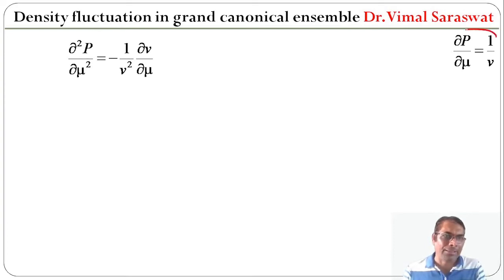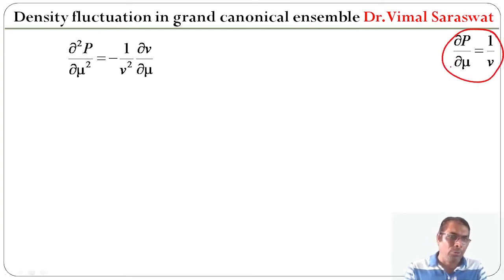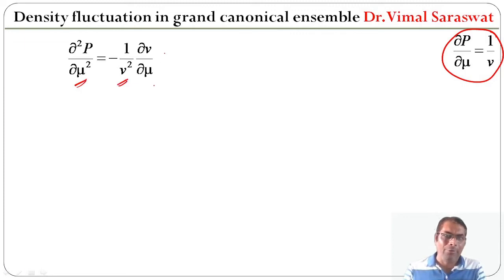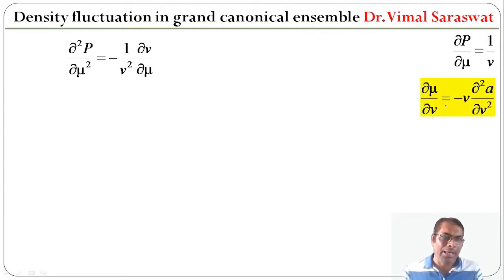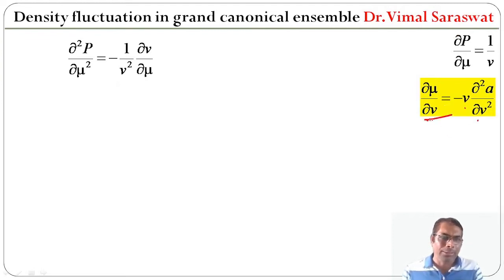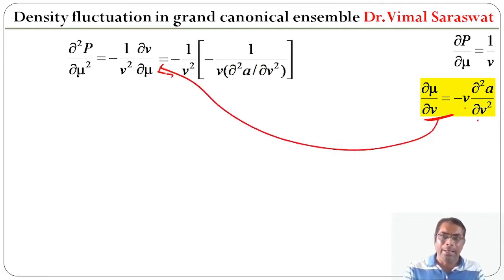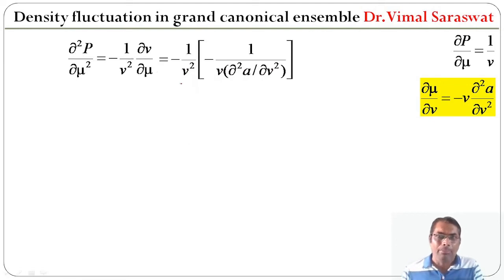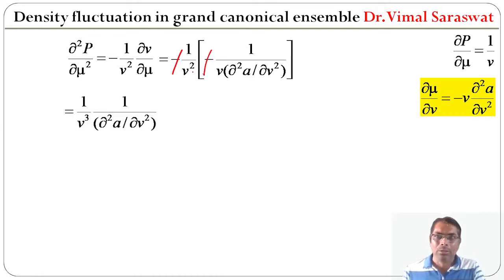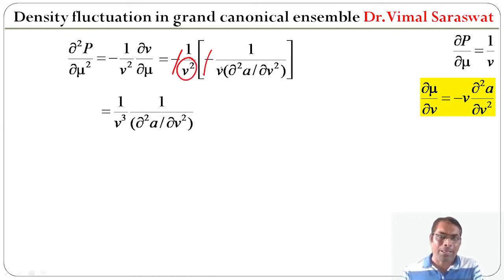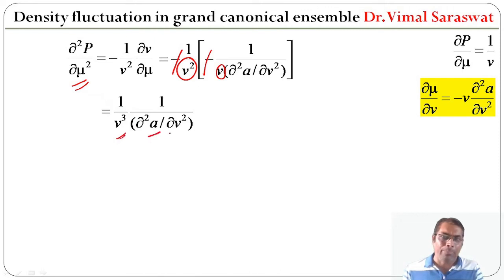Differentiating ∂p/∂μ = 1/v again with respect to μ: ∂²p/∂μ² = ∂(1/v)/∂μ = (∂μ/∂v)⁻¹·(−1/v²). Substituting ∂μ/∂v = −v·(∂²a/∂v²) gives ∂²p/∂μ² = 1/(v³·(∂²a/∂v²)).